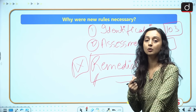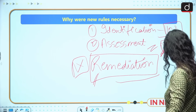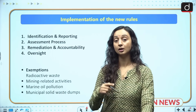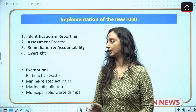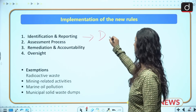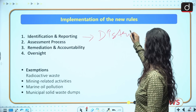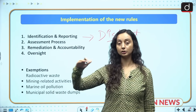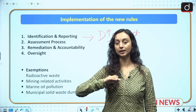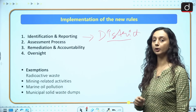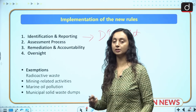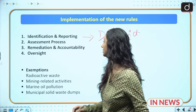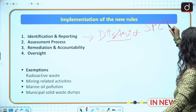The rules entail a four-step process. The first step is identification and reporting, which has been given to the district authorities. All levels of government are involved — district, state, and central. District authorities will conduct half-yearly reports, identify suspected contaminated sites, and report them to the state pollution control board.